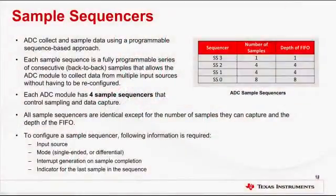Each ADC module has four sample sequencers, which are used to collect and sample data using a programmable sequence-based approach. Each sample sequencer is a fully programmable series of consecutive back-to-back samples that allow the ADC module to collect data from various input sources without having to be reconfigured and without CPU intervention. All sample sequences are identical except for the number of samples they can capture. To configure a sample sequencer, you need to know which input channel is connected to the signal source, whether to capture samples in single-ended or differential mode, and whether to generate an interrupt on sample completion.